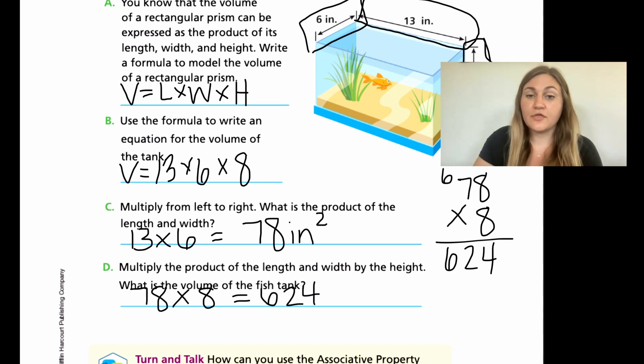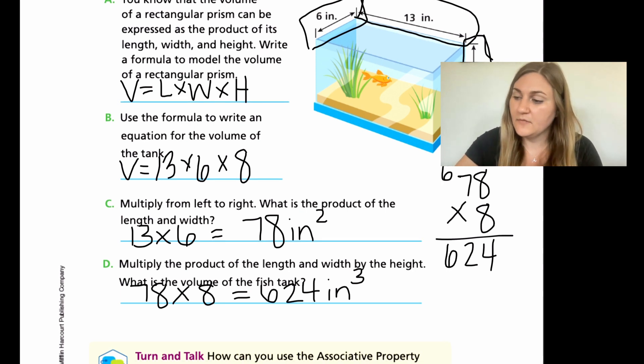But remember, I found three dimensions, three parts. So I'm going to keep my units, which is inches. But now that it's volume, I'm putting the 3 up in the exponent, which is cubed. So 624 inches cubed, or another way you can say it is 624 cubic inches.